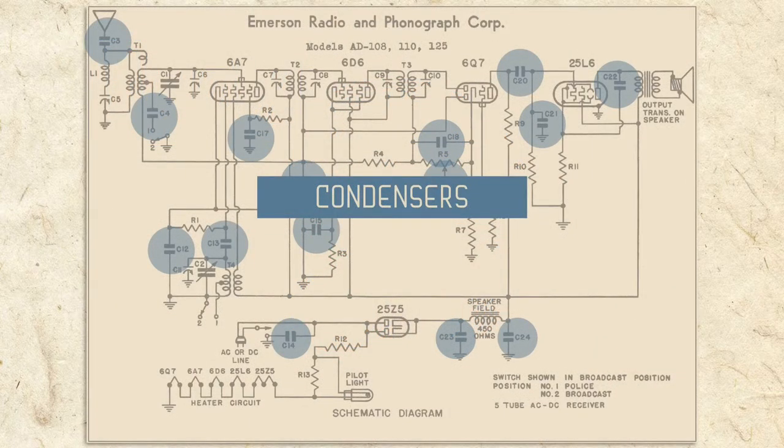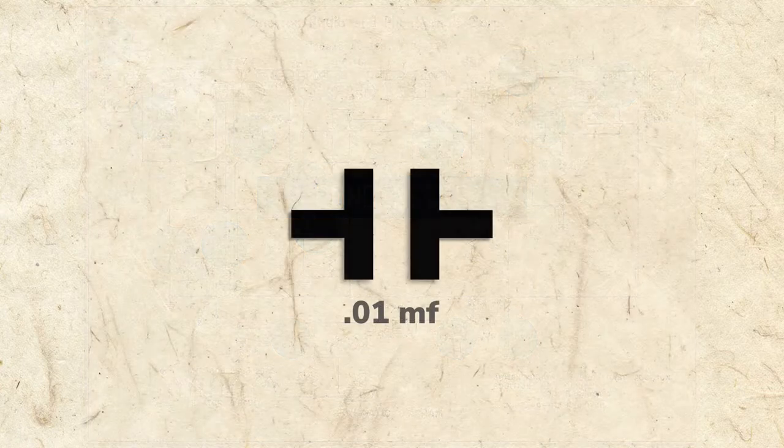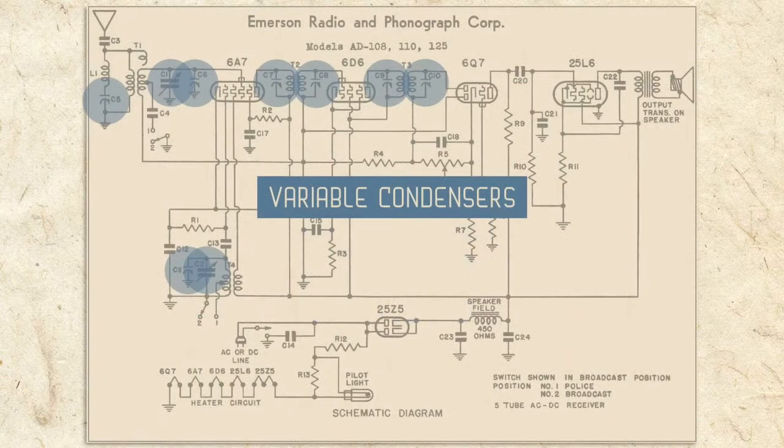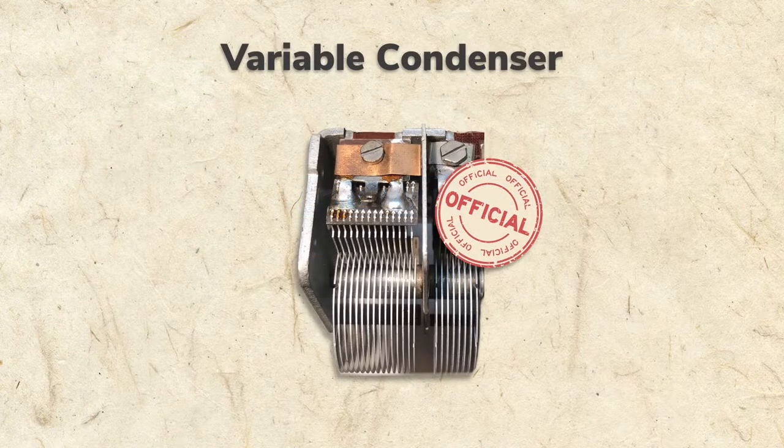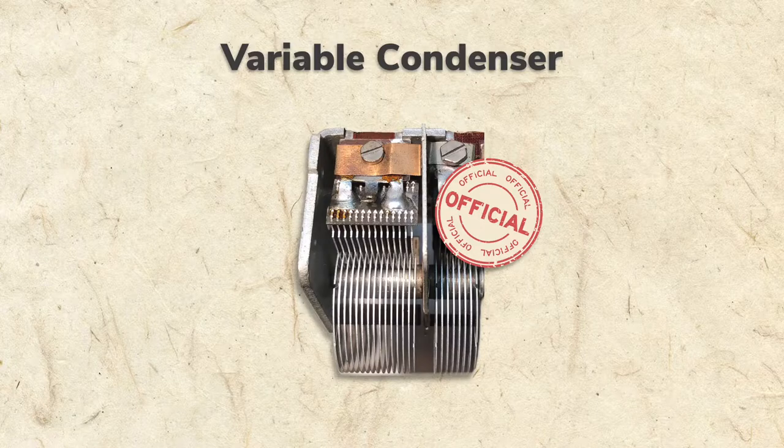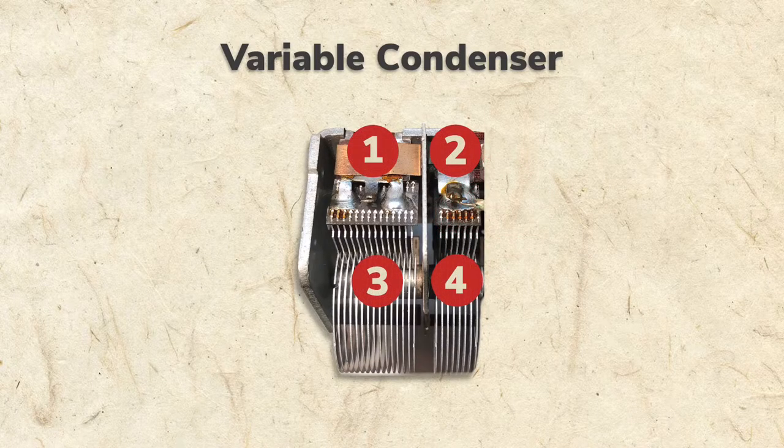As we've learned, in the early days of electronics, capacitors were called condensers. A variable condenser is simply a capacitor with variable capacitance. There are many variable capacitors in our radio, but the only one officially called a variable condenser is the one used for tuning. And it's actually not one, but four variable condensers.